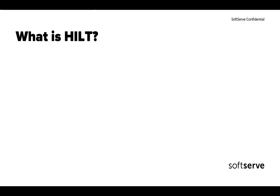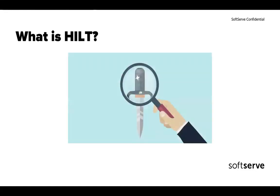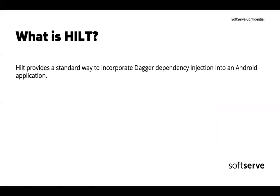So what is Hilt? Well, Hilt is the special name that describes the special handler for a knife or a dagger, which makes a dagger easier to handle and easier to use - because without it you'll probably hurt yourself. Generally, according to documentation, Hilt is the standard way to use Dagger in an Android application.